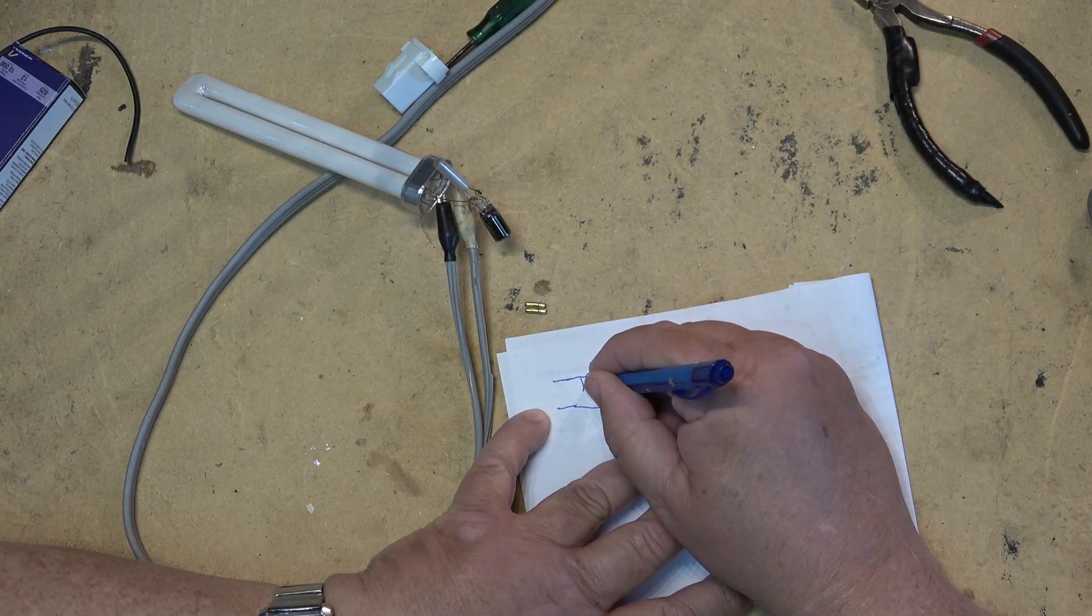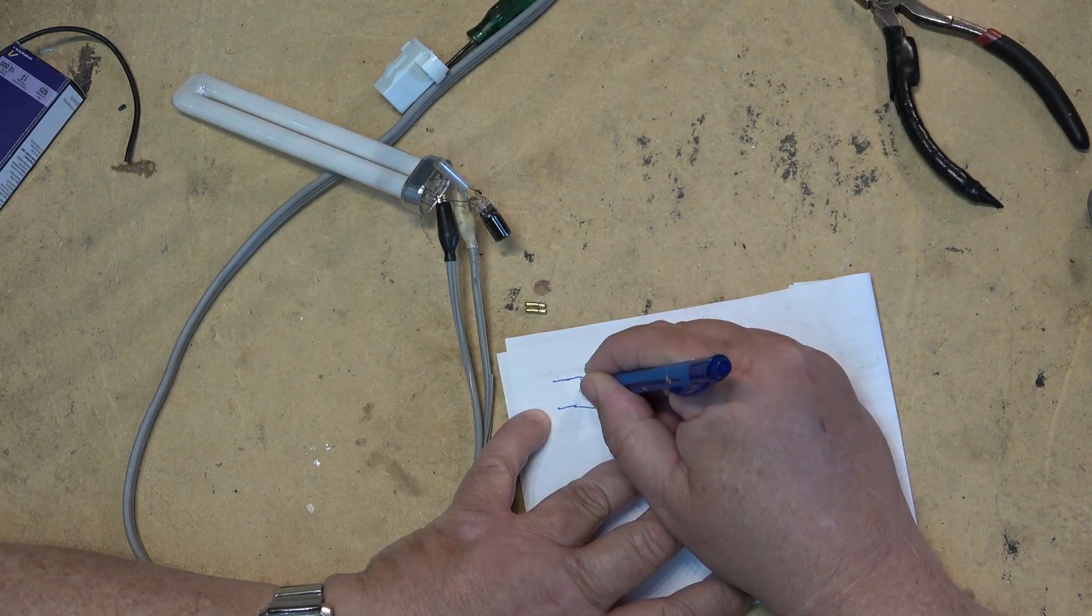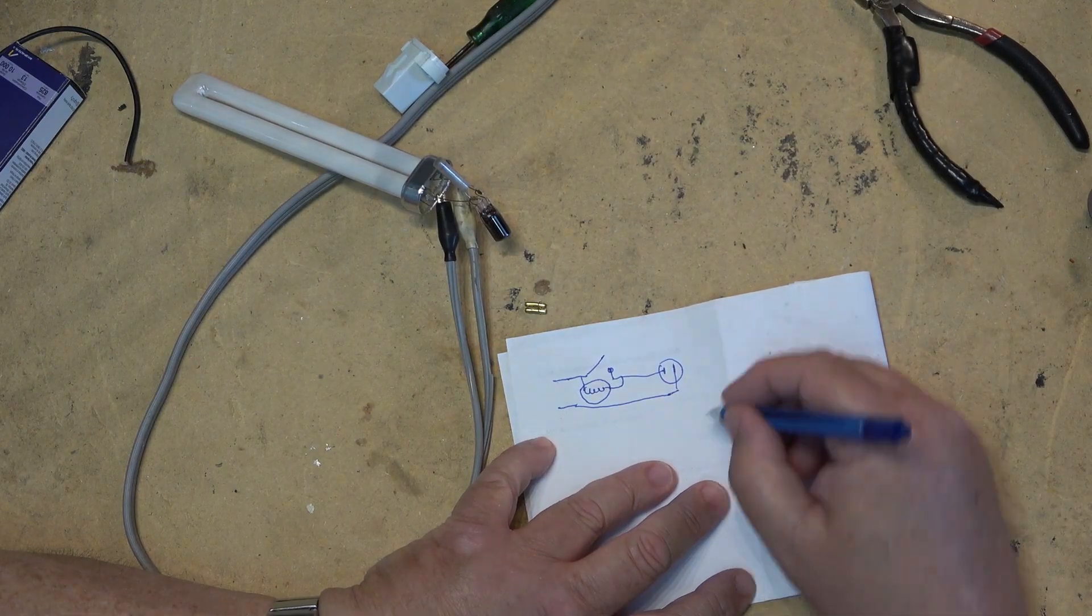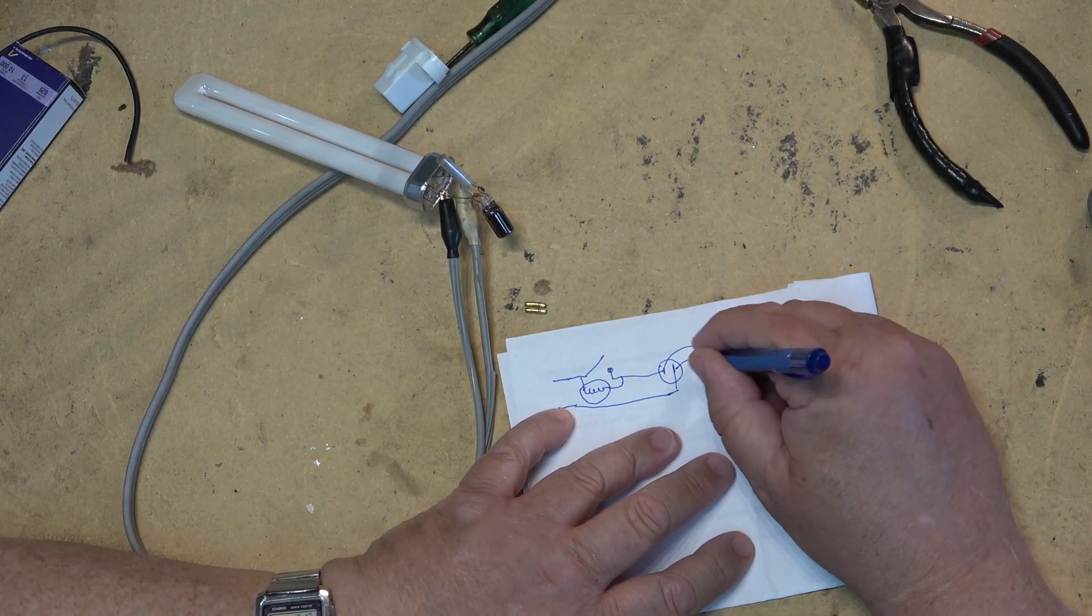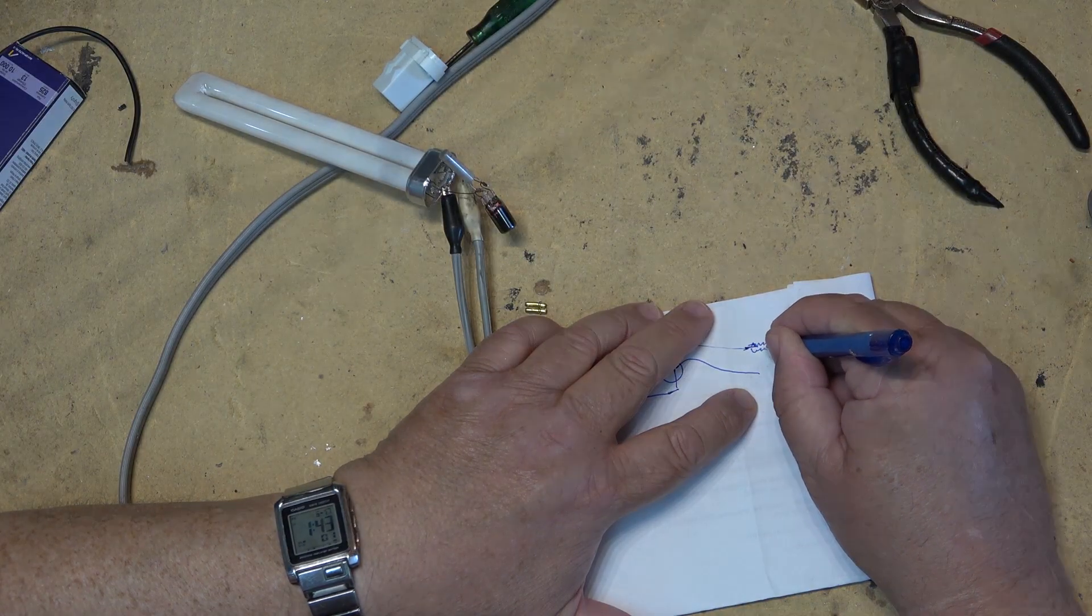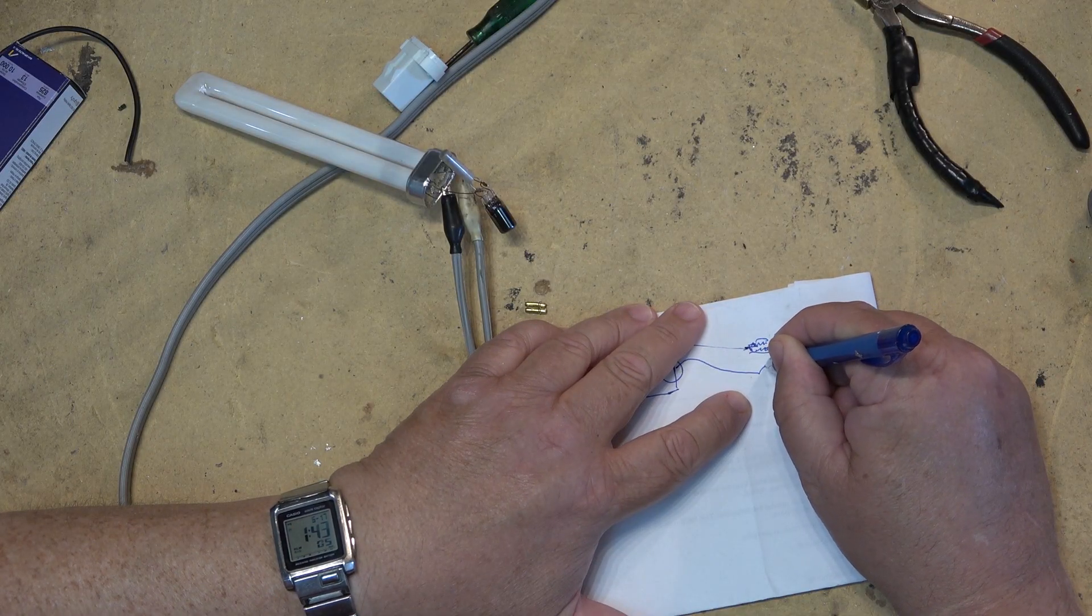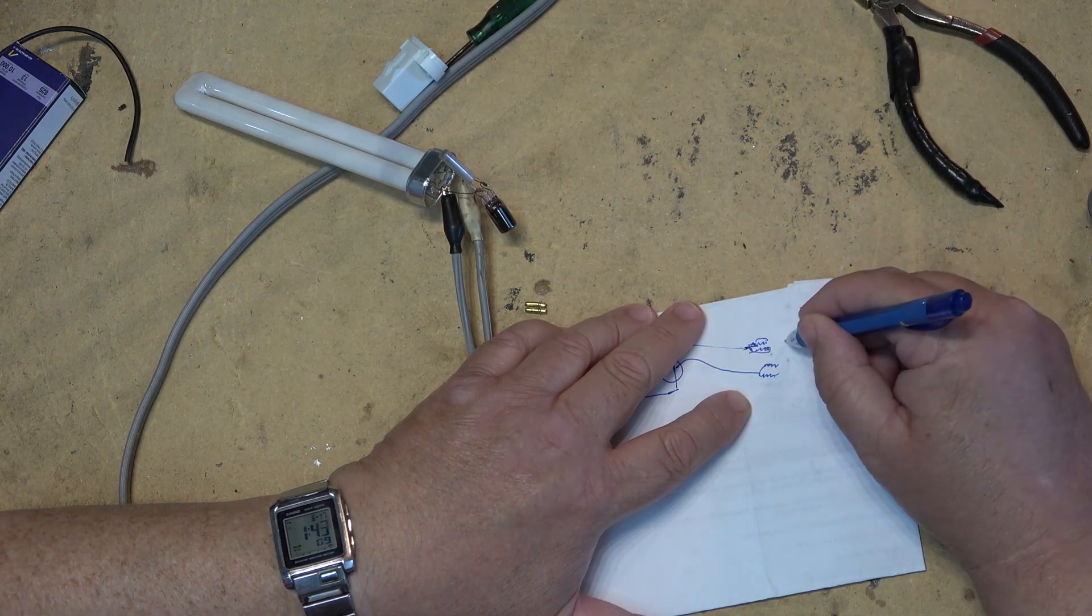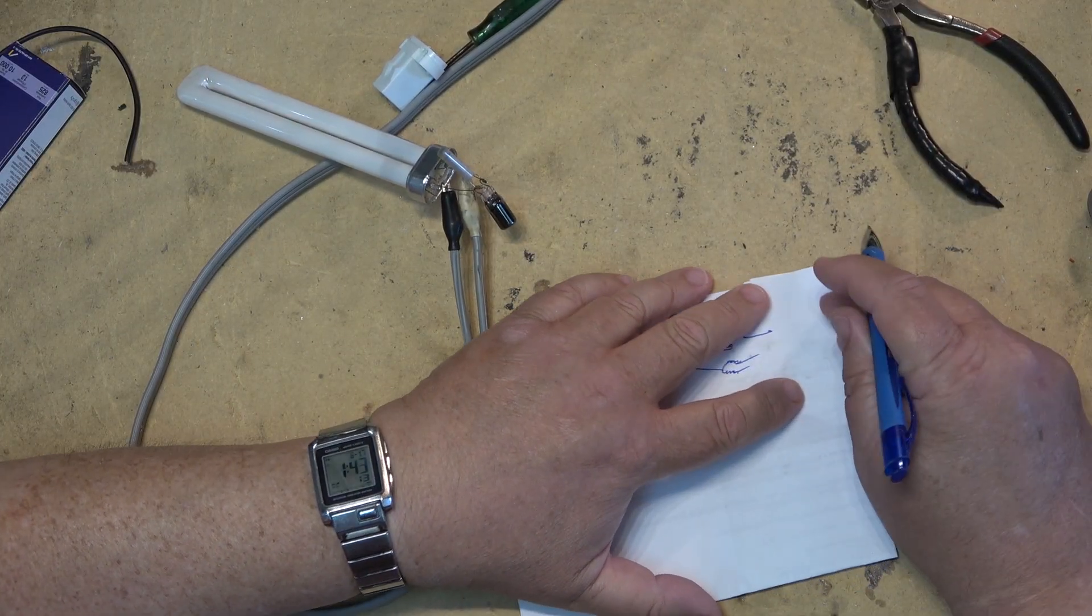So basically what I'm doing is I'm connecting, I'm plugging in my cord and it's got the two alligator clips on it. And I've got them clipped on to the wires that are going to the fluorescent starter.